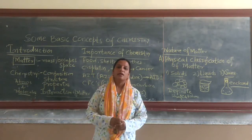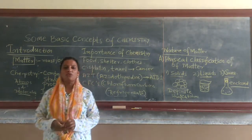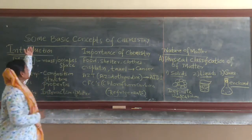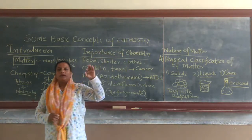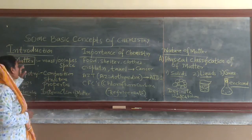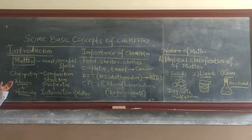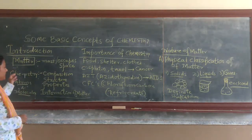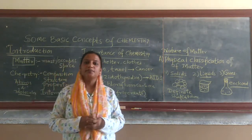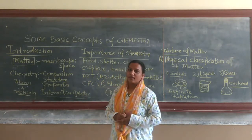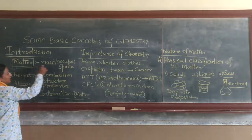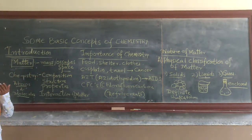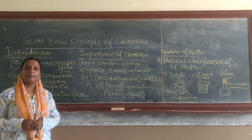Hello students, let us begin with the first chapter of general chemistry, that is some basic concepts of chemistry. I will begin this chapter by giving a brief introduction regarding matter. What is matter? Anything which has mass and occupies space is called matter. Matter can be seen or its presence can be felt.